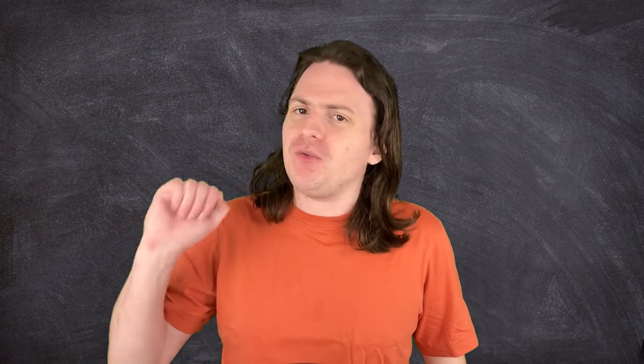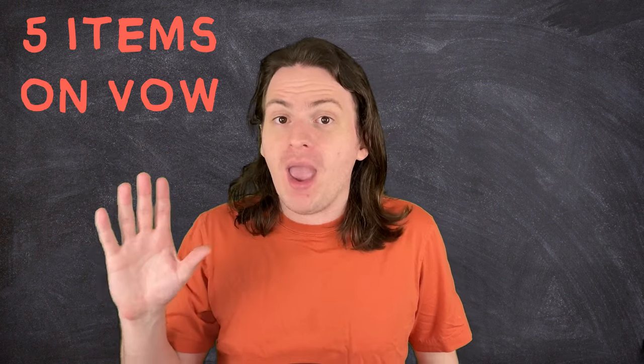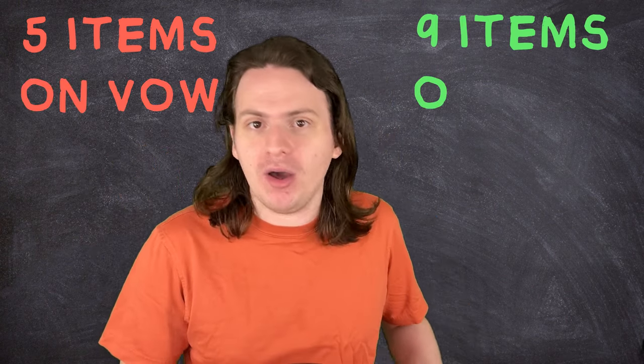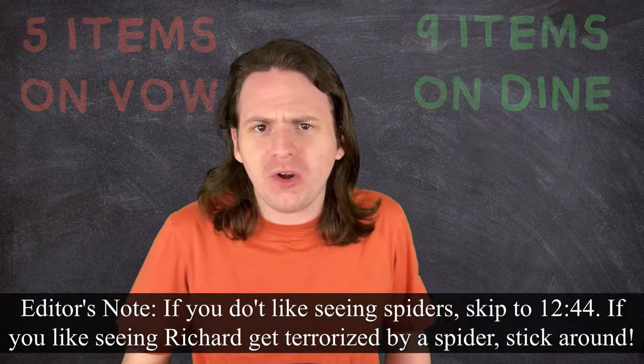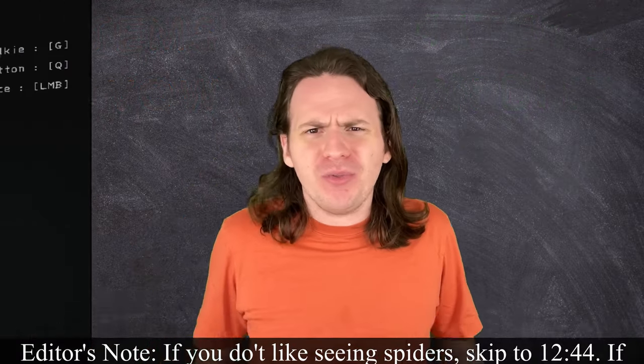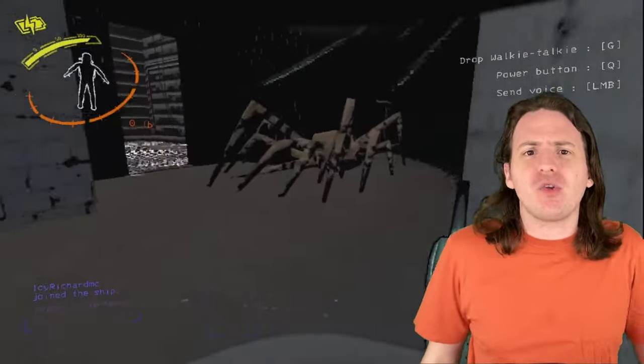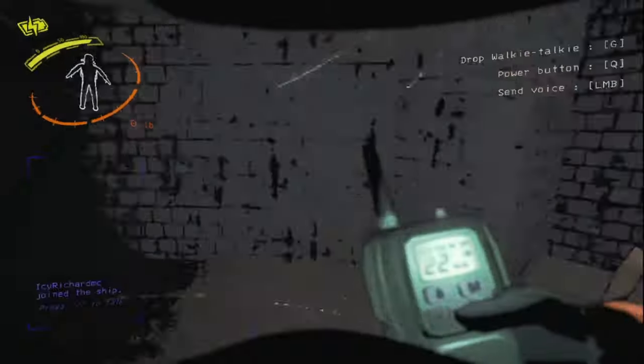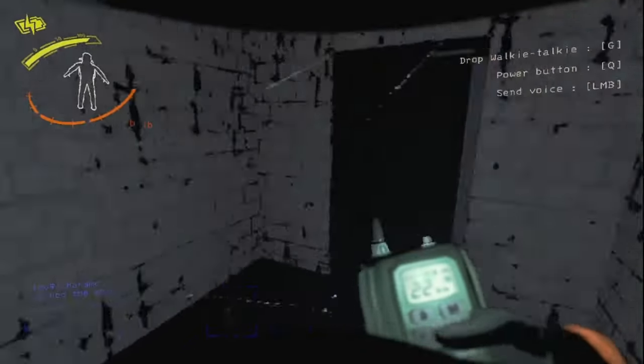This will give you the number of items that will spawn per standard map size. In other words, the higher the density, the easier it is to find stuff. To turn this into a more useful form, let's make it a percentage by finding the highest density value across all the moons, in this case Dine at 18.46, and divide everything by that number. So if there was no danger at all, you could find around 5 items on Vow in the same time it took you to find 9 on Dine. But of course, there is danger! There's always danger! Danger around every corner!